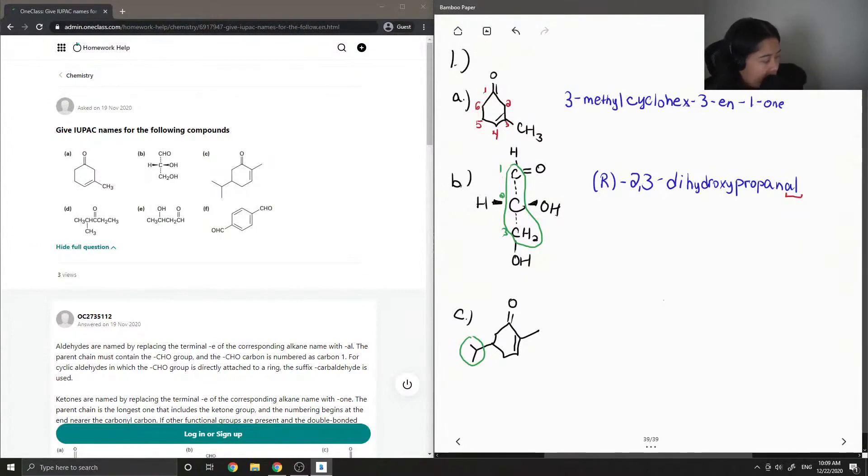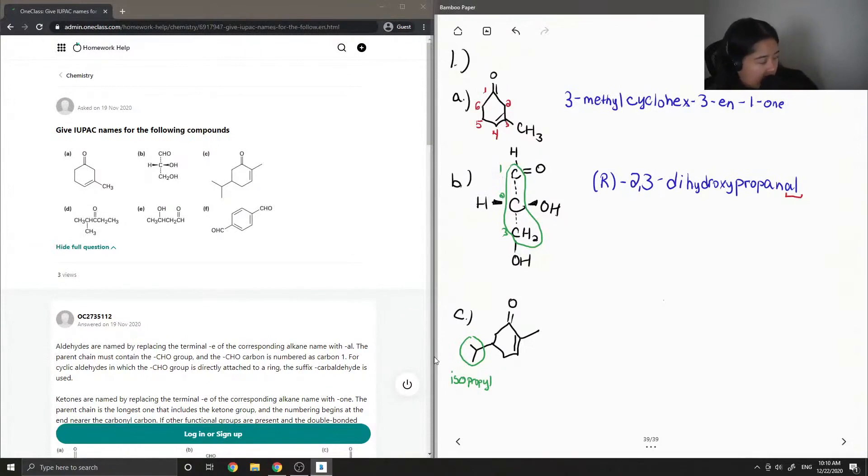Typically, we would write propyl as the group. But since it is in this different configuration, this is called isopropyl. It's still a three carbon chain, it just looks more like a Y instead of a straight chain. I'm going to number this compound starting with the aldehyde group or ketone group as one and then going clockwise.